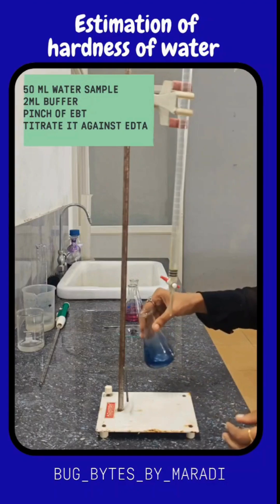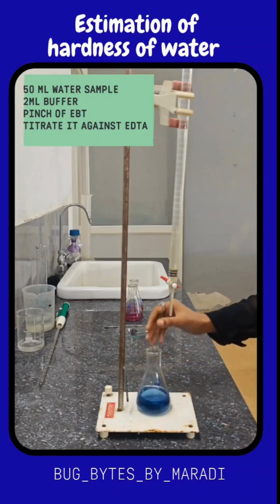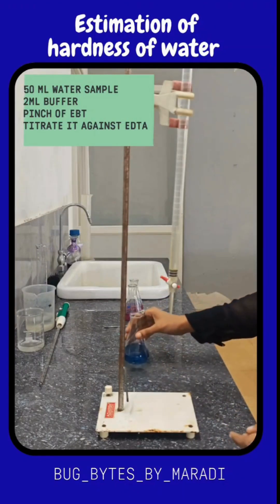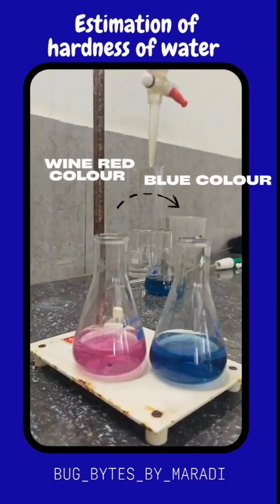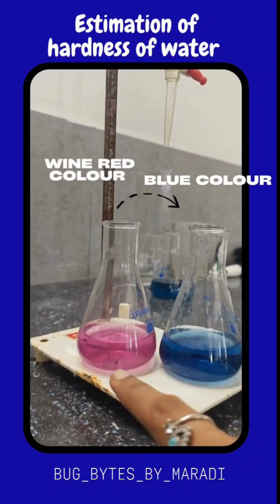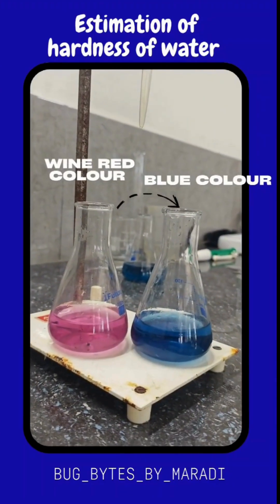That blue color will be the endpoint, and at that point you have to stop the titration. So the initial color is wine red and the endpoint color is blue.